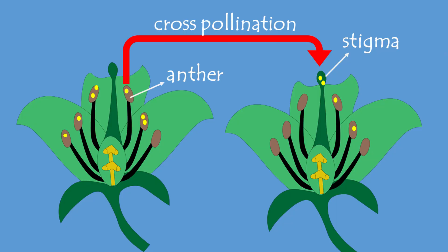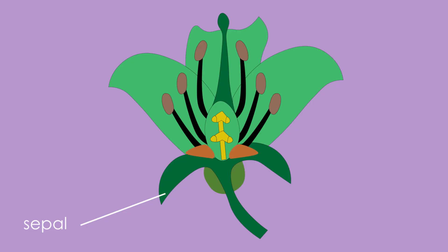When these animals visit the flower for nectar, they often carry pollen from one flower to another, helping the plant to reproduce and make seeds.